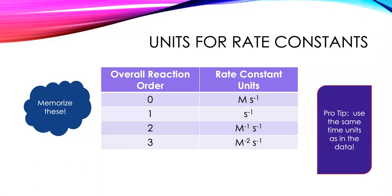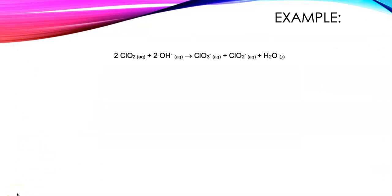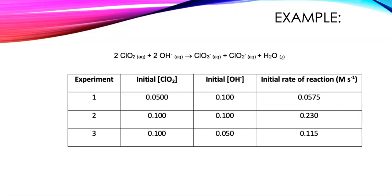Of course you can figure this out from the rate law, but if you're in a time crunch — say it's a test — memorizing these units can be very helpful. So let's do an example where we're going to use the method of initial rates to figure out a rate law. Here's the balanced equation we're interested in, and here's the experimental data.